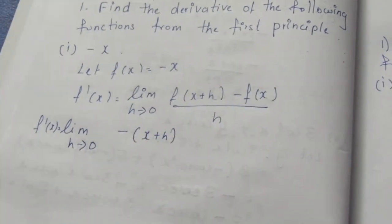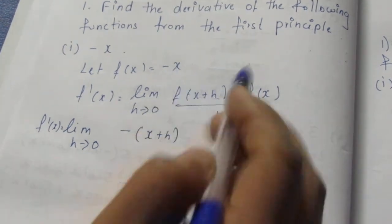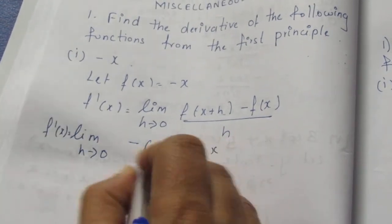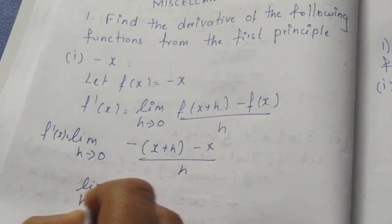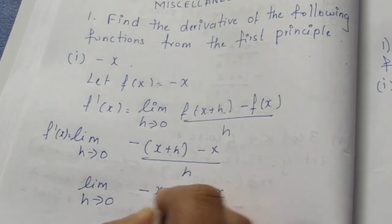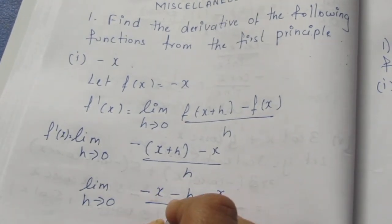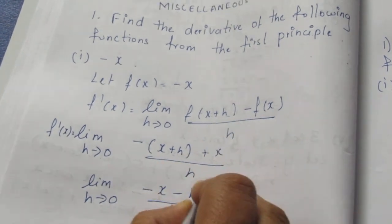Substituting into the formula, we have -(x+h) in place of f(x+h), and -x for f(x). This gives us minus x and plus x in the numerator.